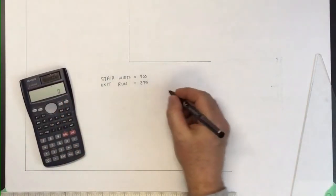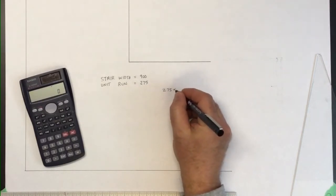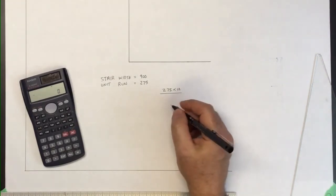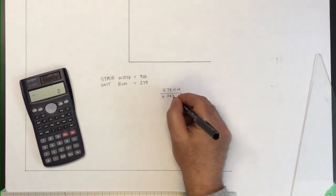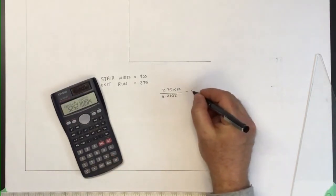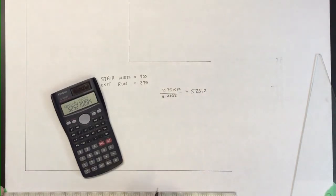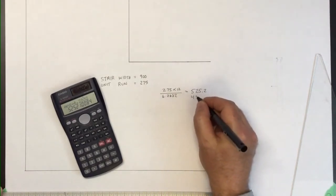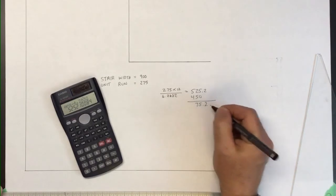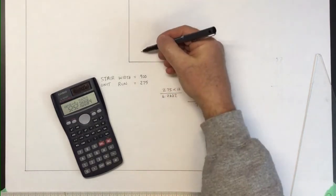And so to calculate our offset, we'll take the 275, multiply by 12 because we're doing 30 degree winders, and then we'll divide by 2 times pi, which is 6.2832. 275 times 12 equals, divided by 6.2832, and that leaves us with 525.2. And from that we will subtract our walking line of 450. That leaves us with 75.2.